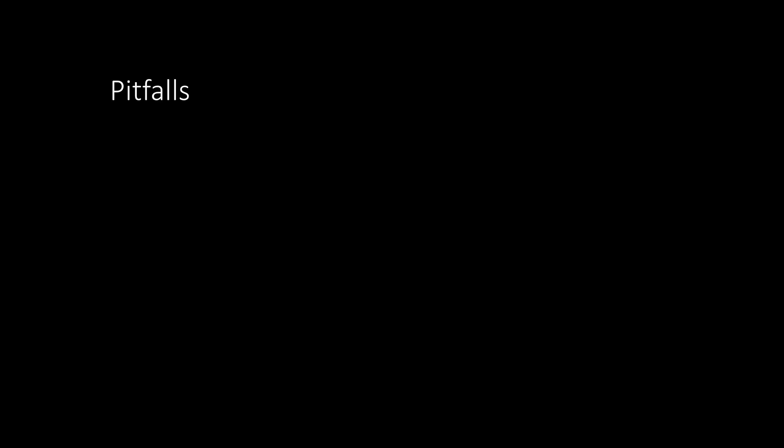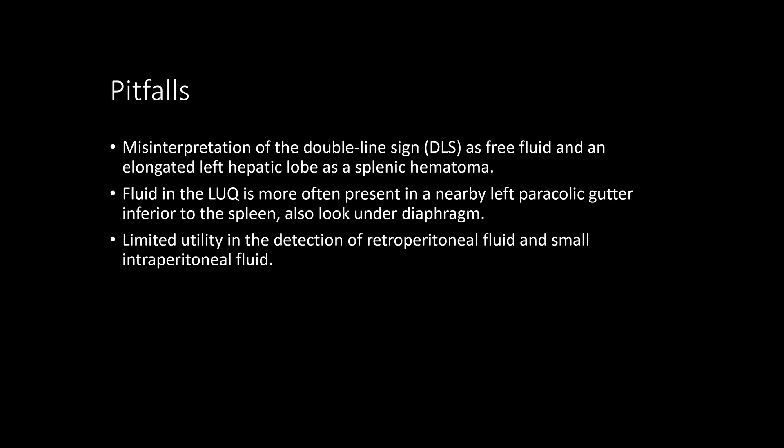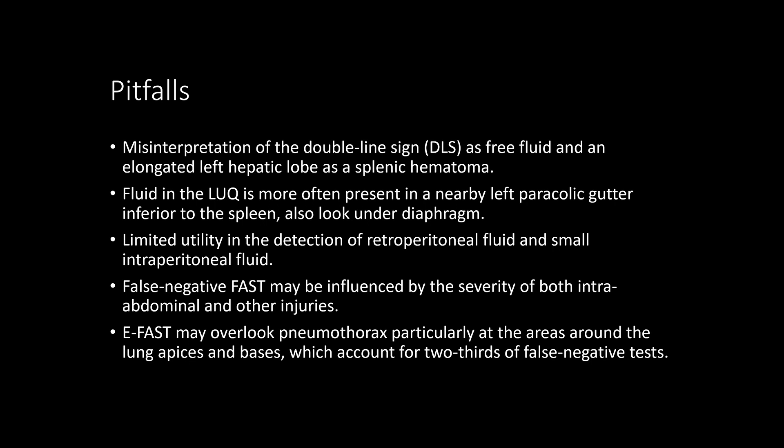Pitfalls include: misinterpretation of the double-line sign (DLS) as free fluid, and an elongated left hepatic lobe as a splenic hematoma. Fluid in the perisplenic window is more often present in a nearby left paracolic gutter inferior to the spleen — also look under the diaphragm. FAST has limited utility in detecting retroperitoneal fluid and small intraperitoneal fluid. False-negative FAST may be influenced by the severity of intra-abdominal and other injuries. eFAST may overlook pneumothorax particularly at the lung apices and bases, which account for two-thirds of false-negative tests.